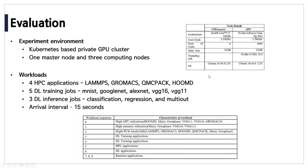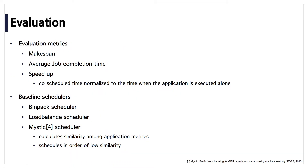Workloads consist of 12 real-world applications with an arrival interval of 15 seconds. The evaluation metrics are makespan, average job completion time (JCT), and speedup. Speedup means co-scheduled time normalized to the time when the application executes alone, so a value close to 1 means co-execution without interference. Baseline schedulers include a max-memory-based bin packing scheduler and interference-aware schedulers such as load-balance and MYSTIC. The MYSTIC scheduler calculates similarity among application metrics and schedules in order of lowest similarity.